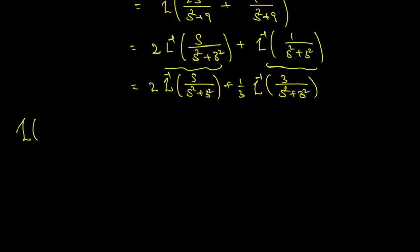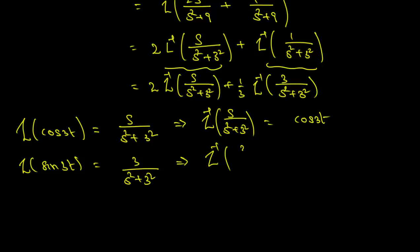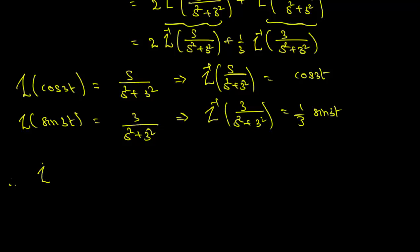We have the Laplace transform of cos(3t) = s/(s² + 3²), therefore the inverse transform of s/(s² + 3²) is cos(3t). And the Laplace transform of sin(3t) = 3/(s² + 3²), which implies the inverse transform of 3/(s² + 3²) is sin(3t). Therefore the inverse Laplace transform of F(s) is 2·cos(3t) + (1/3)·sin(3t).